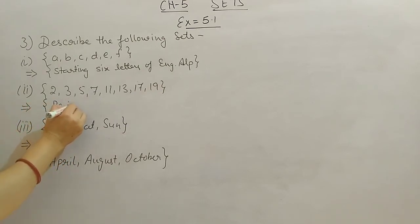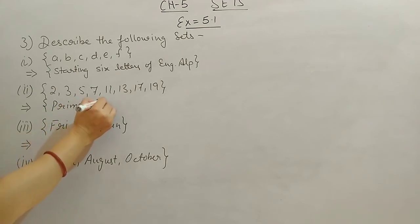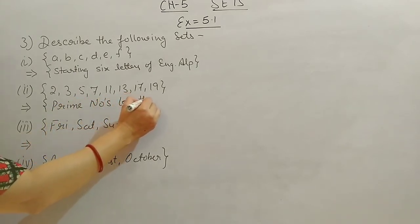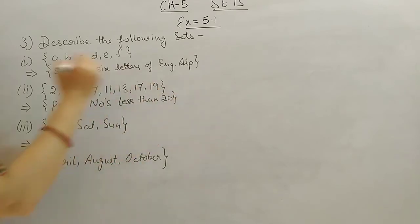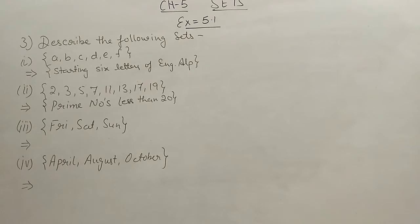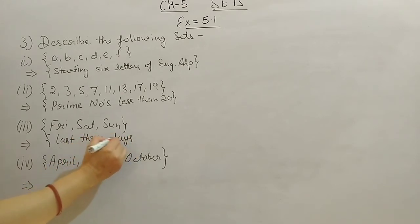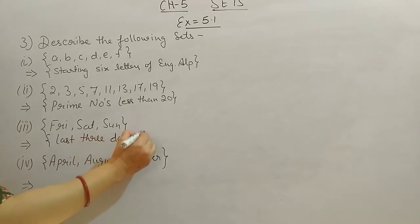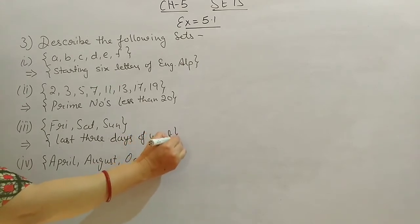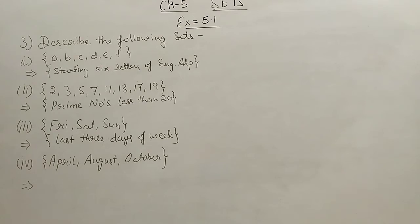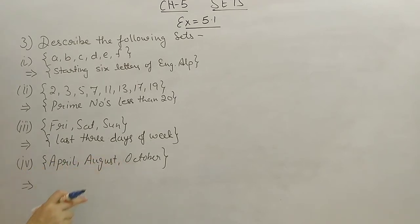Third: {Friday, Saturday, Sunday} — these are the last three days of the week. Fourth: {April, August, October} — the similarity here is they all start with A, A, and O — meaning these are months of the year starting with a vowel.